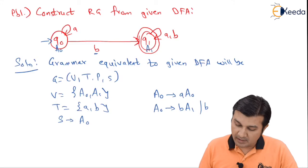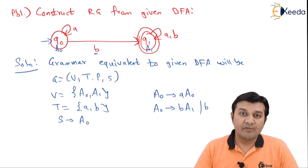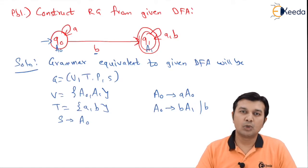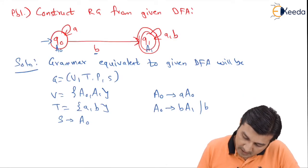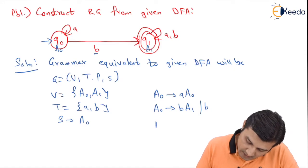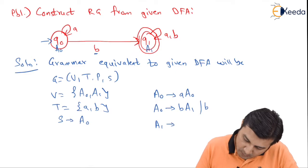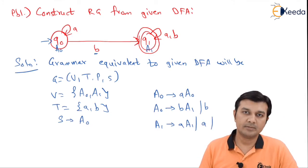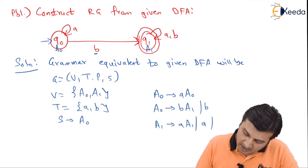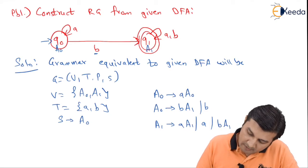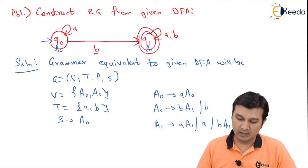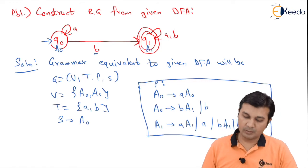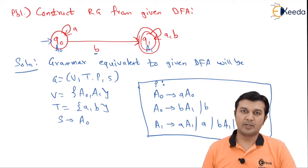We are replacing epsilon by b because b is a valid input symbol — only if there is no input would it be replaced by epsilon. In almost all cases, it is always a finite terminal. Going to state A1, I observe that A1 on receiving input symbol a comes back to A1, and since A1 is the final state, it will also output a single a. Similarly, A1 on receiving input symbol b comes to A1, and since it is the final state, it will also output b. These are the production rules for this grammar, and the DFA is converted to the regular grammar, as simple as that.